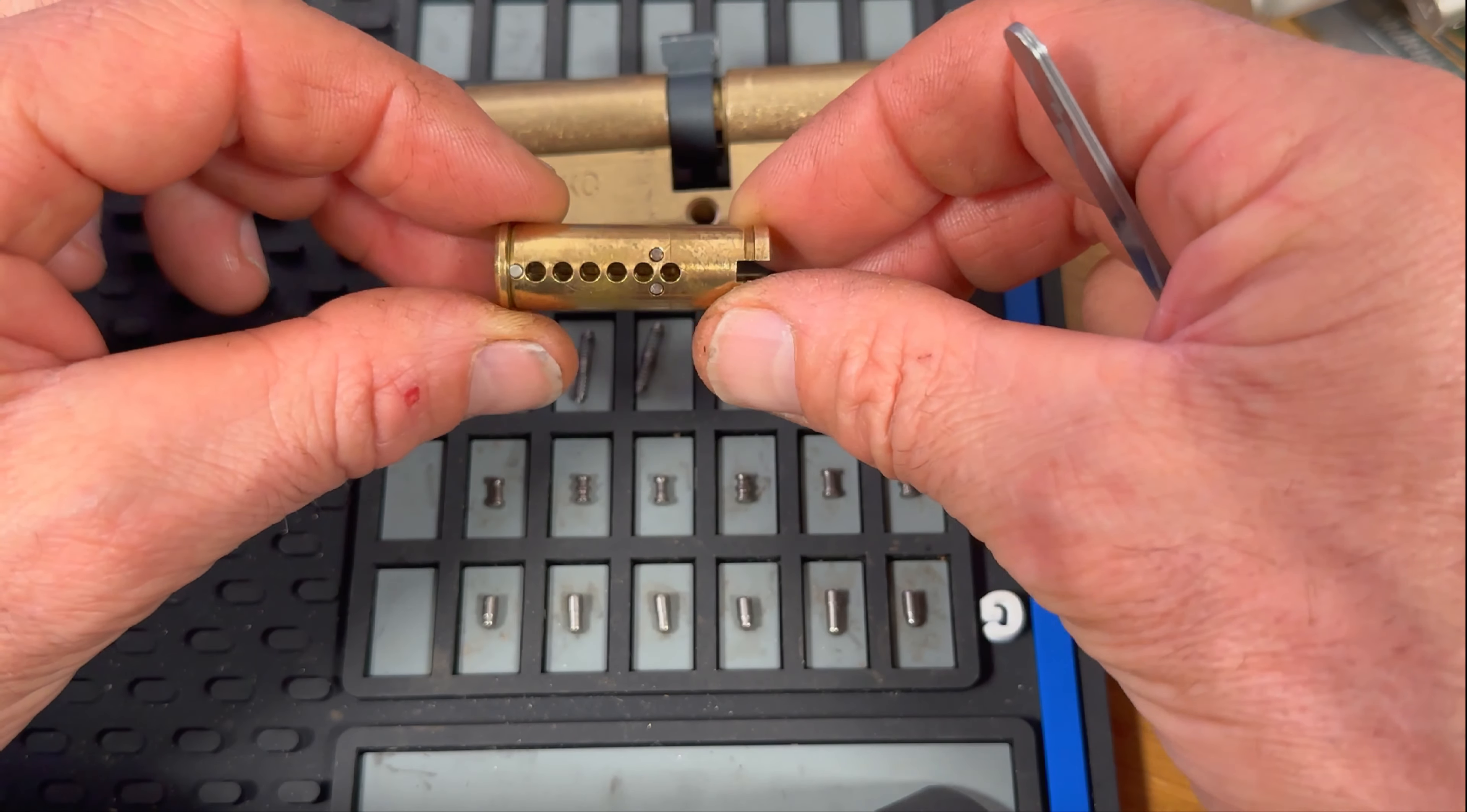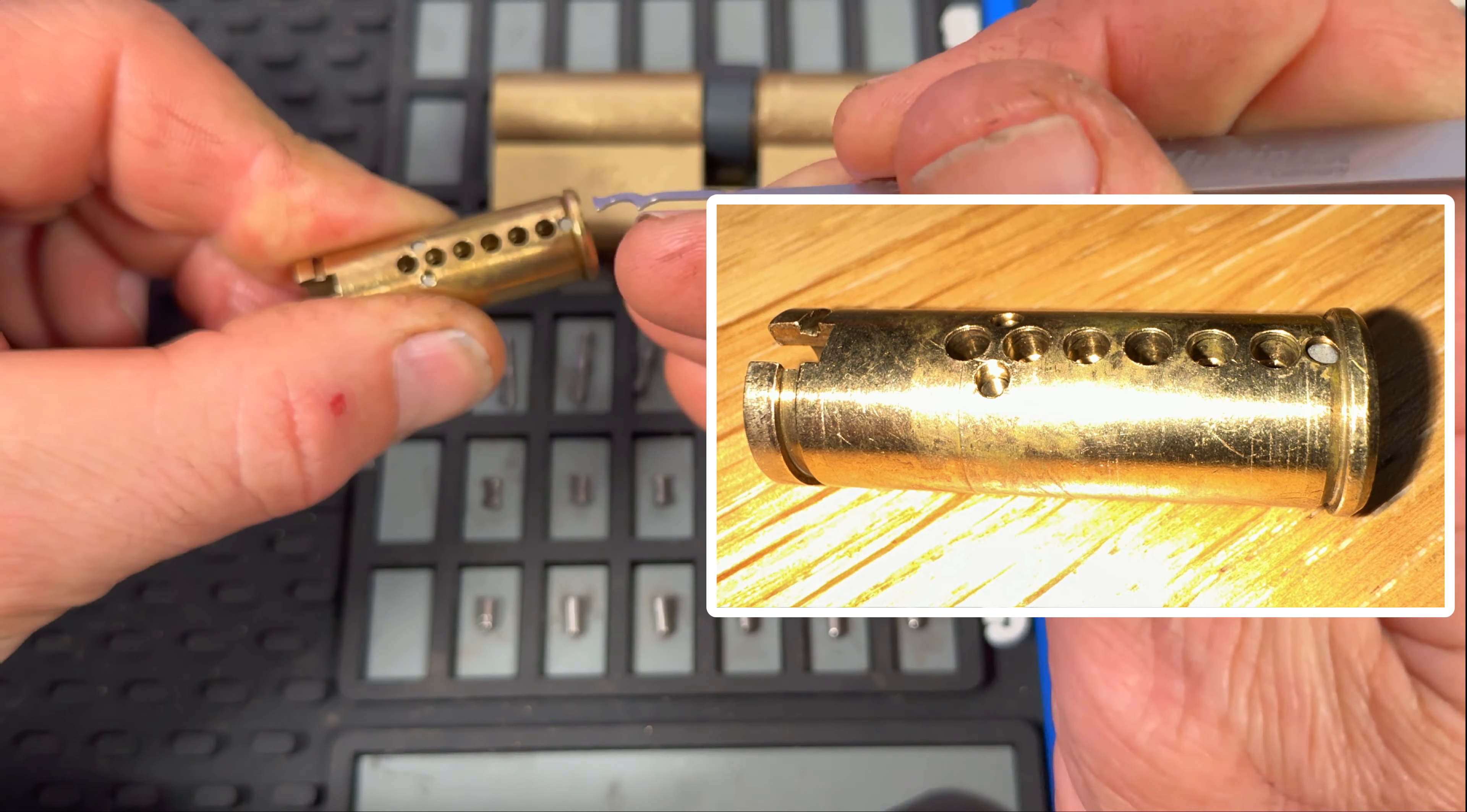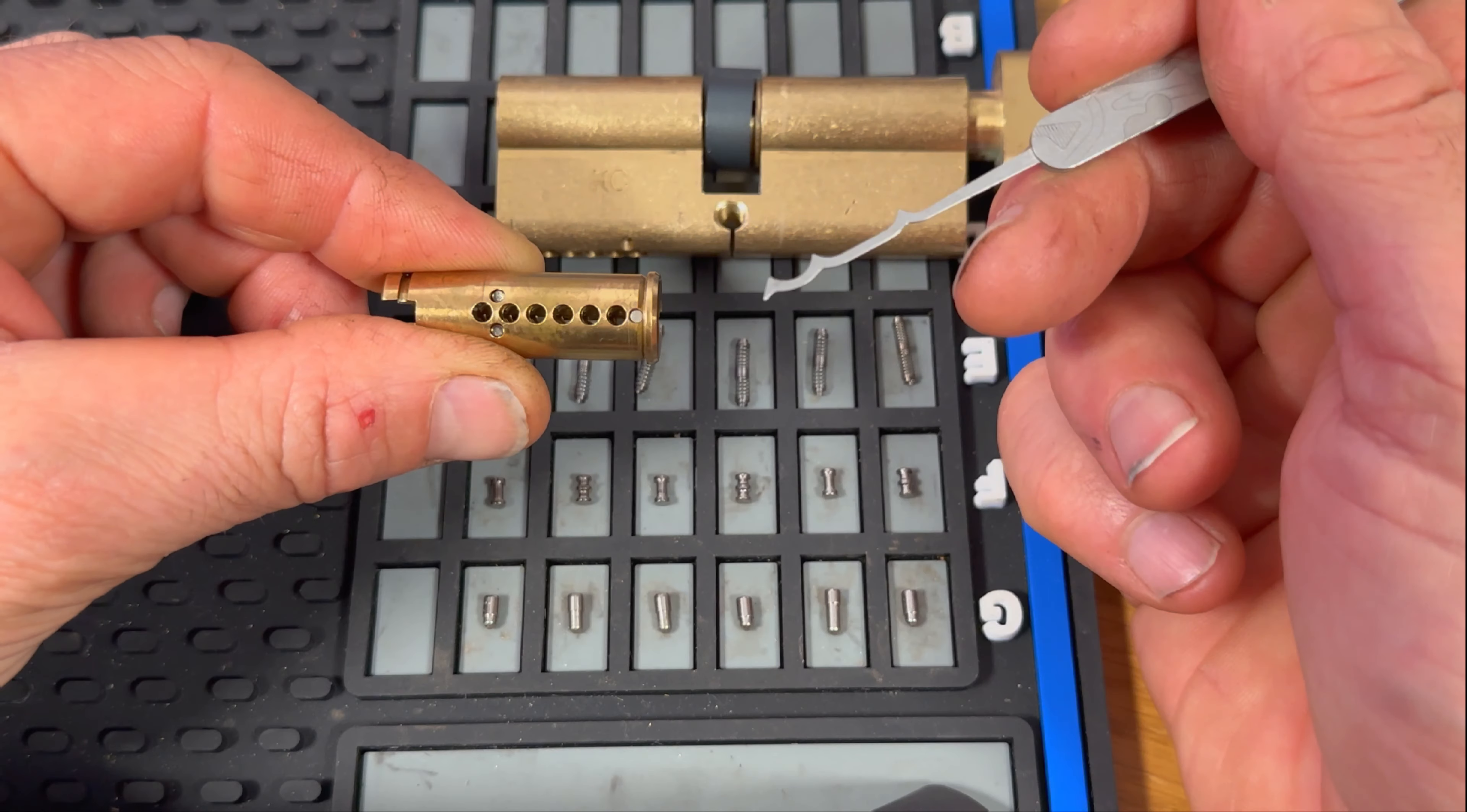On the actual core itself, again you've got three anti-drill pins on there that mirror the anti-drill pins on the cylinder itself. And each of these pin chambers has got a little lip just at the top, a little sharp edge. Which is obviously going to catch the key pins. And also when the spools catch on there, the spool pins catch on there, then they're going to take a little bit more persuasion to set.